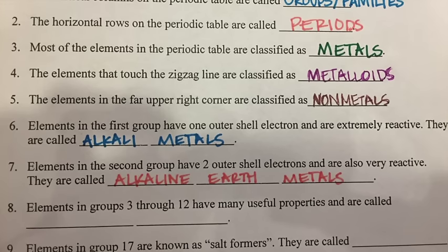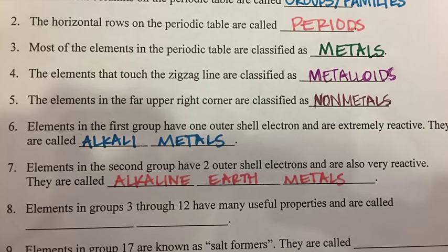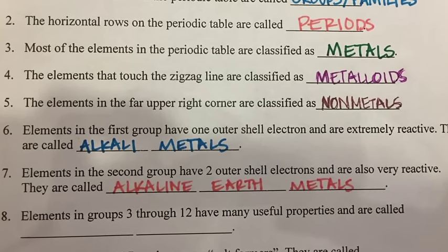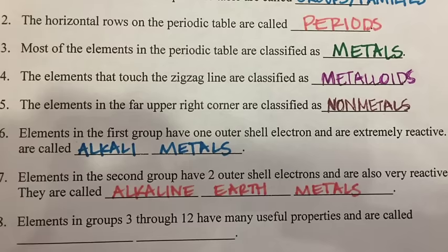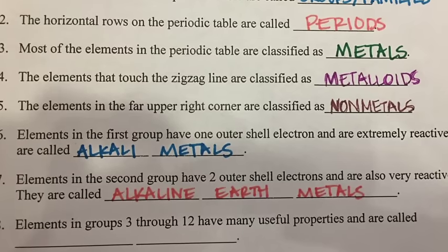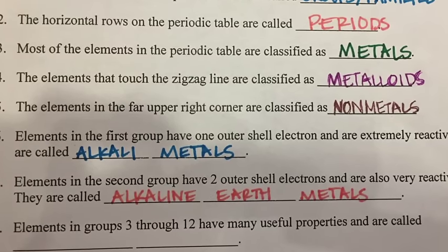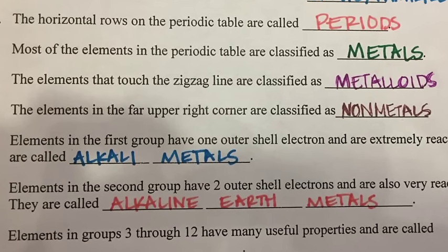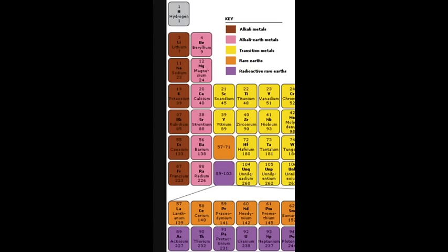The second group, or the second column of the periodic table, are the alkaline earth metals. They are slightly less reactive than alkali metals, they are silver colored, but they are more dense than the alkali metals. This group consists of beryllium, magnesium, calcium, strontium, barium, and radium.